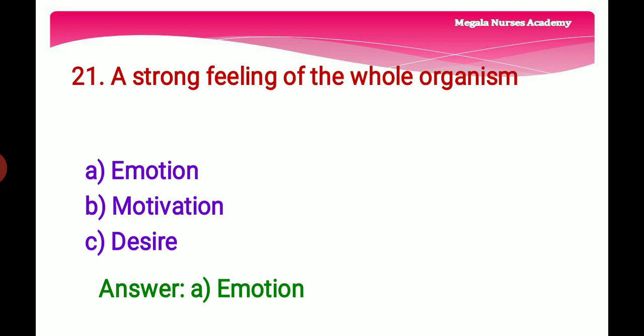Twenty-first question: A strong feeling of the whole organism — Option A: Emotion, a strong feeling. Option B: Motivation, the process that initiates, guides, and maintains goal-oriented behaviors. Option C: Desire, a strong feeling of wanting to have something. The right answer is Option A, emotion.